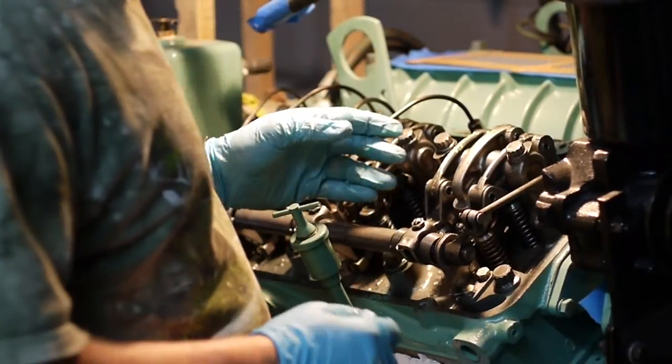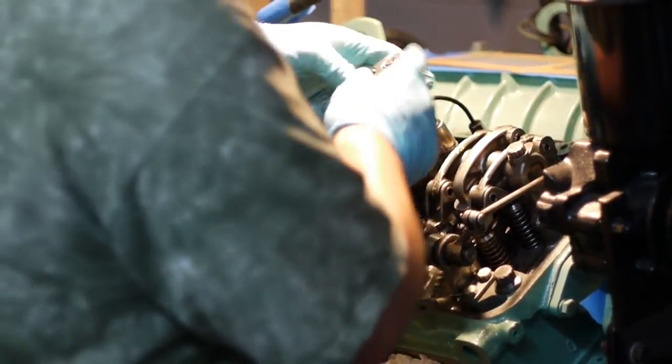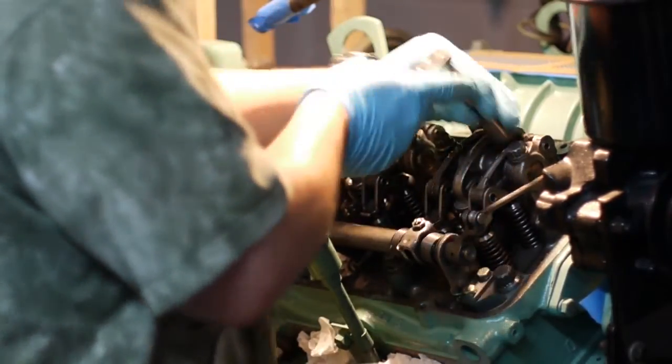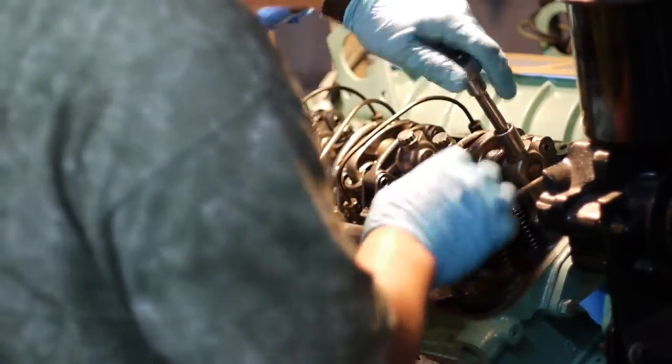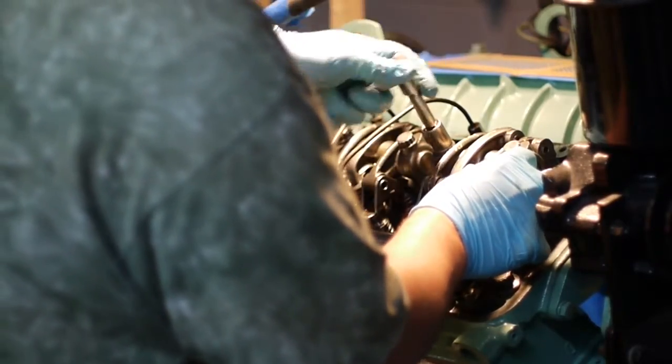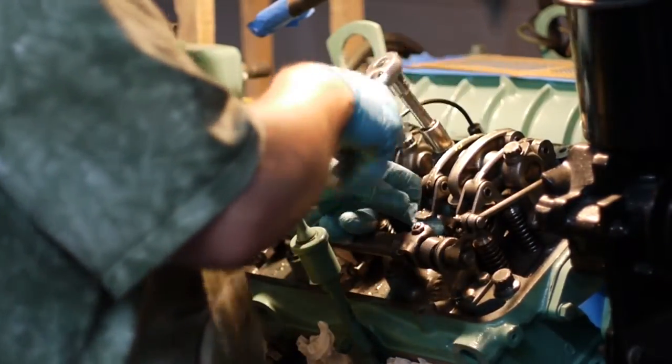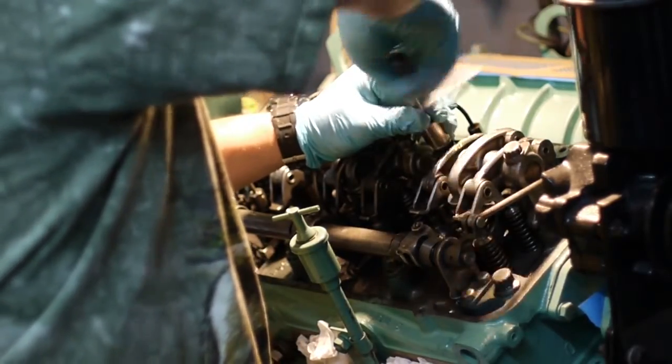Once the fuel pipes are removed the next procedure is to remove the retaining bolts for the rocker arms. You'll notice the valve bridge is coming up as the rocker arms are loosened.